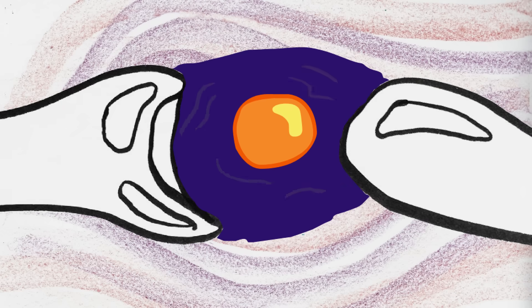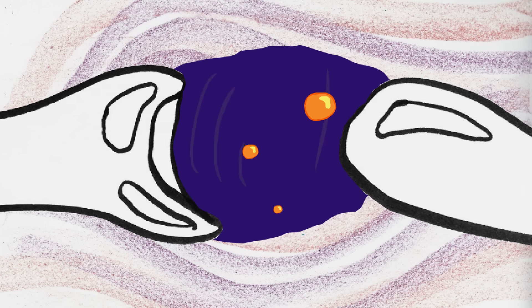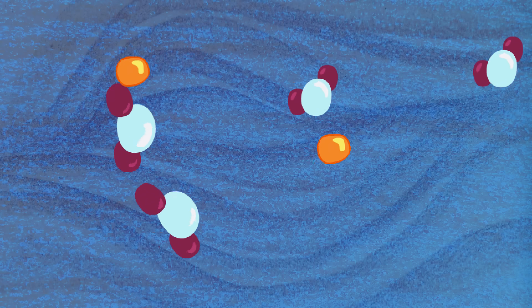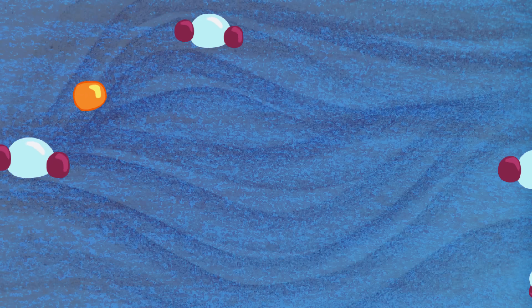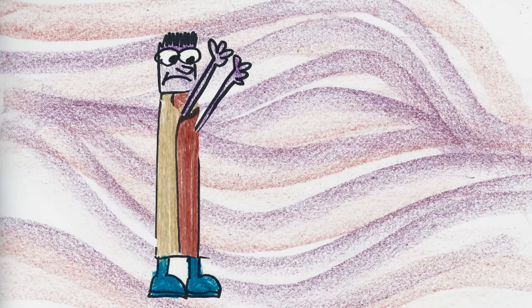But the bubble doesn't last long. The surrounding fluid presses on it until it finally collapses. The bubble's gases scatter throughout the synovial cavity and slowly dissolve back into the fluid over the course of about 20 minutes, which is why it can take a while before you can pop the same joint again.